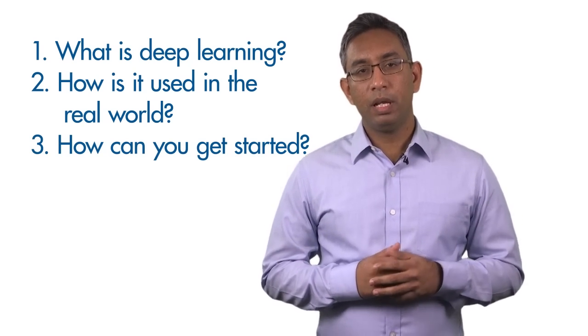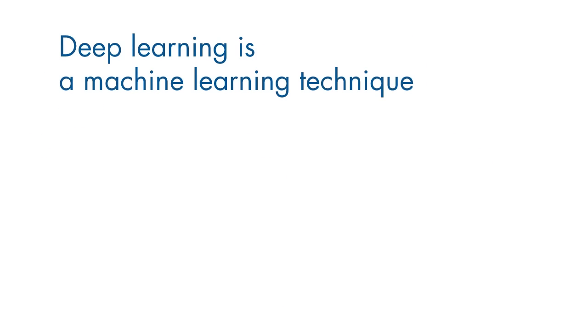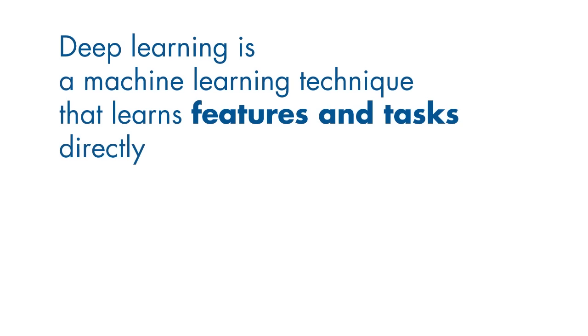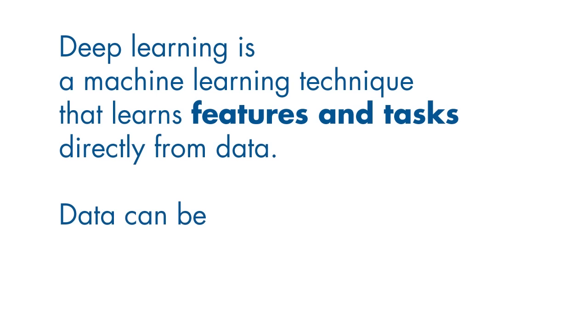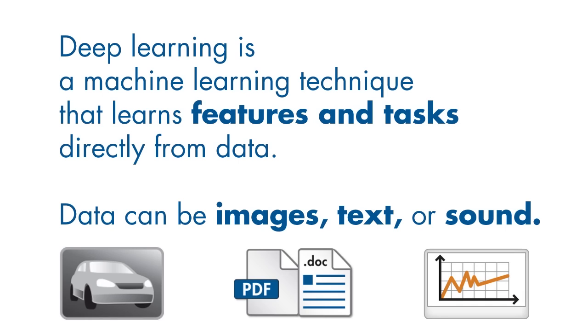So what is deep learning? Deep learning is a machine learning technique that learns features and tasks directly from data. Data can be images, text, or sound. In this video, I'll be using images, but these concepts can be used for other types of data too.